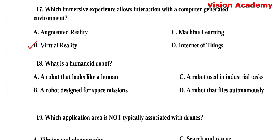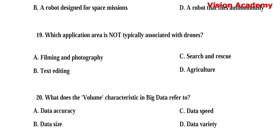Question number 18. What is a humanoid robot? Option A: A robot that looks like a human. Option B: A robot designed for space missions. Option C: A robot used in industrial tasks. Option D: A robot that flies autonomously. Here, option A, a robot that looks like a human, is the right answer.